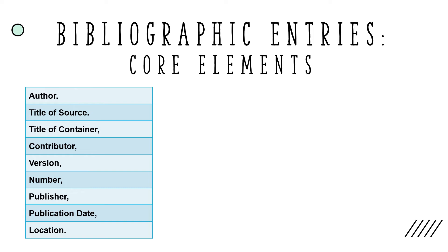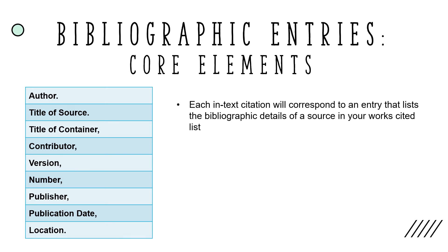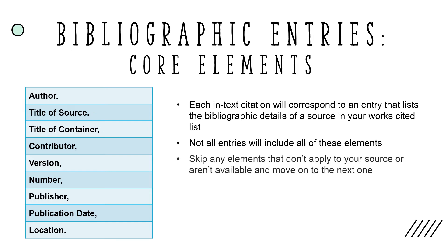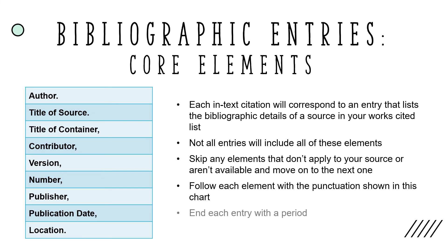Each of your in-text citations will correspond to an entry that lists the bibliographic details of a source in your Works Cited list. Each entry will include up to nine core elements: the author, the title of the source, the title of the container, other contributors, the version, the number, the publisher, the publication date, and the location. Not all entries will include all of these elements — just skip any that don't apply. Follow each element with the punctuation shown in the chart, but be sure to end each entry with a period.